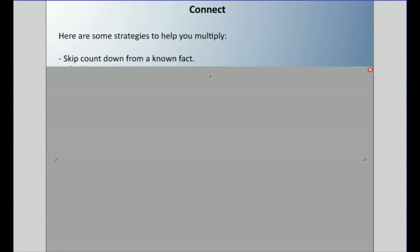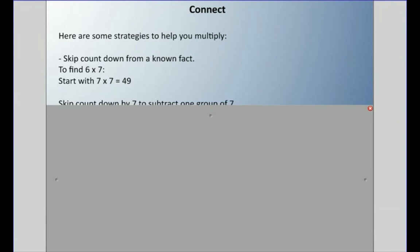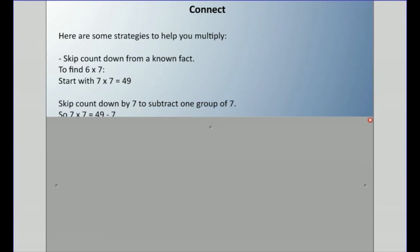To find six times seven, maybe you know seven times seven equals 49. You could take away one group of seven — subtract one group. So 49 minus seven is 42, meaning six times seven is 42.